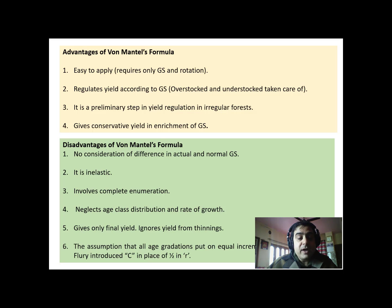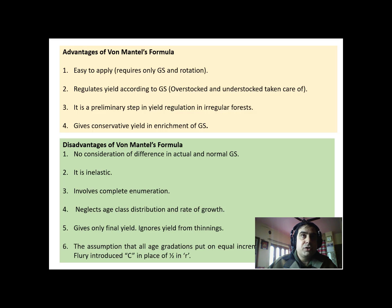Because assuming all age gradations put on equal increments is factually wrong, Fleury introduced a constant c in place of 1/2. The value 1/2 represents half of the rotation, and Fleury replaced it with c so that it may be substituted by 1/3, 1/2, 1/8, or 1/7 depending on the condition of the forest. This is all about von Mantel's formula.